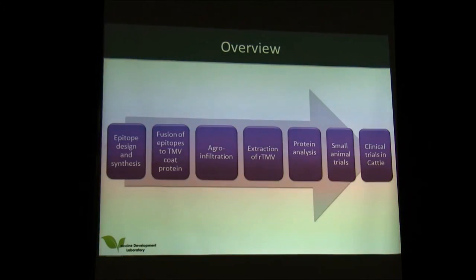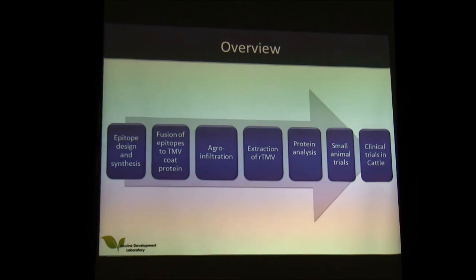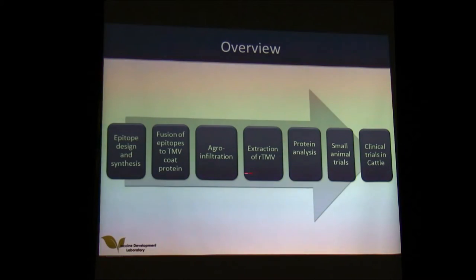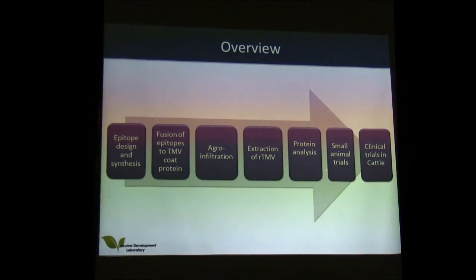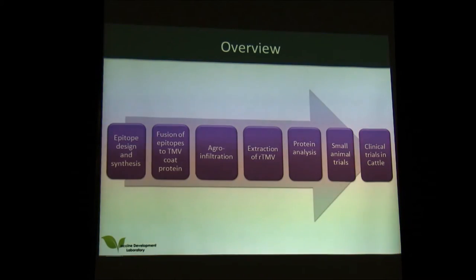As an overview of the actual project: first, design epitopes and synthesize those to be used for the vaccine; fuse those epitopes to the coat protein of tobacco mosaic virus; agro-infiltrate the plants; extract the virus from the plants; carry out protein analysis to confirm you've got TMV and that your epitopes are being expressed; do small animal trials to see if your recombinant virus is antigenic and elicits an immune response; and finally, carry out clinical trials in cattle to see if it does elicit immunity.